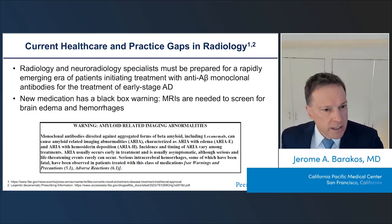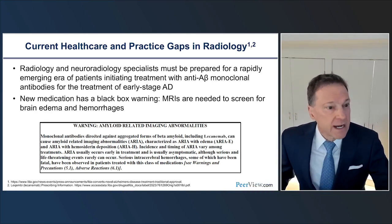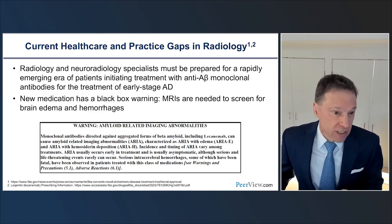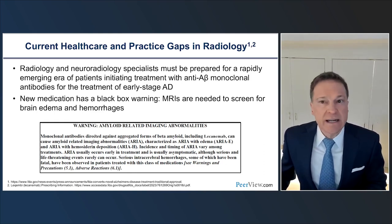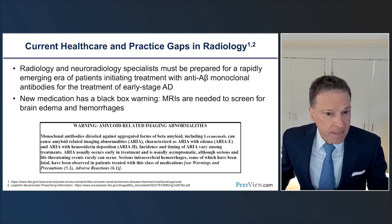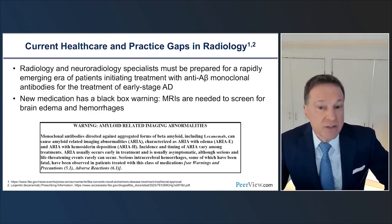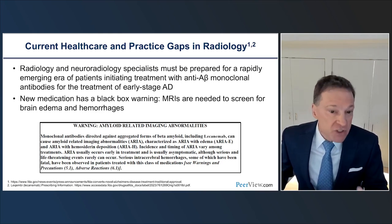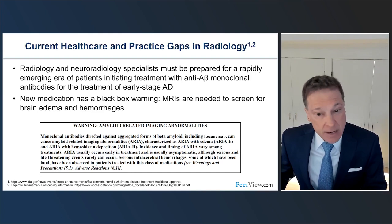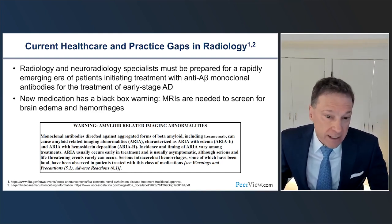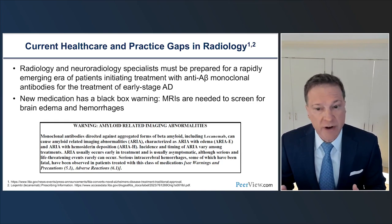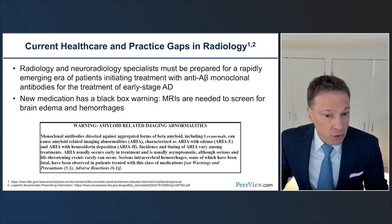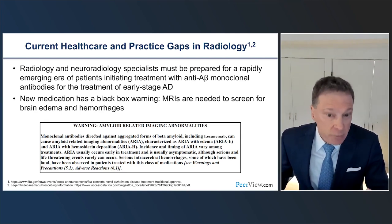It is imperative for radiologists and neuroradiology specialists to be prepared for the rapidly emerging era of patients initiating treatment with anti-amyloid monoclonal antibodies for early stage Alzheimer's disease. These FDA-approved agents contain a black box warning. These are exciting times as these new anti-amyloid agents are the first disease-modifying tools we have to address Alzheimer's disease, and many additional drugs are in the pipeline.